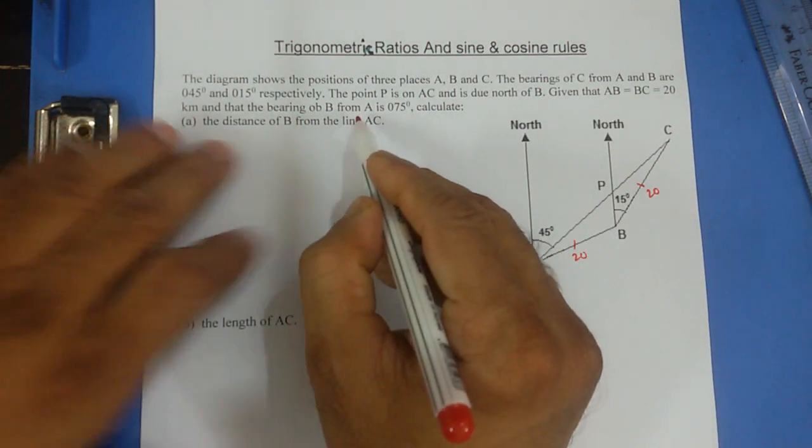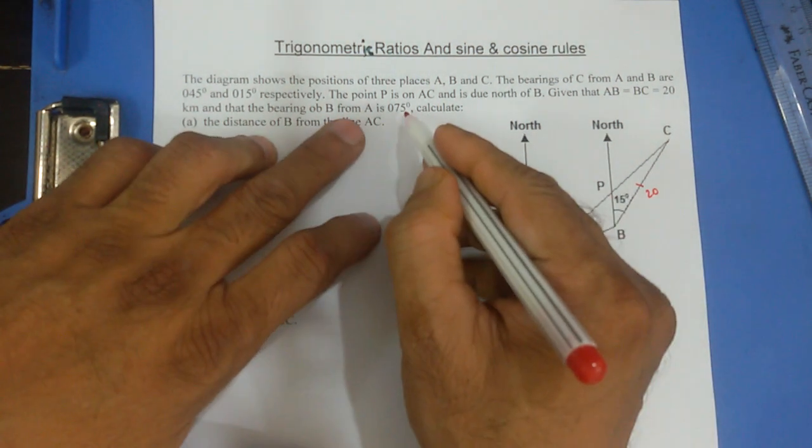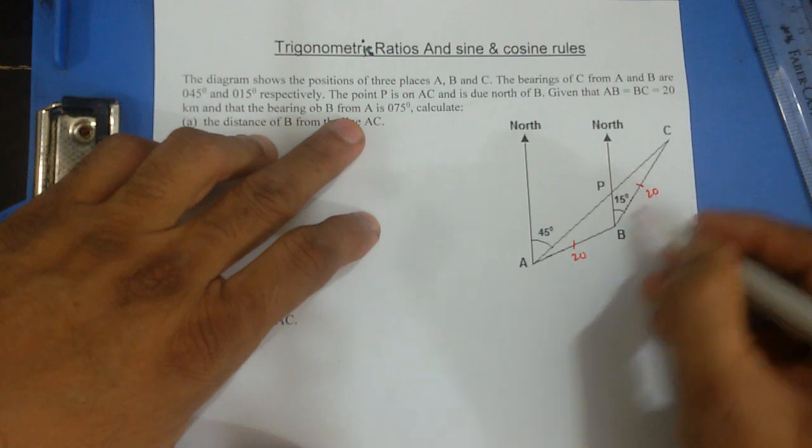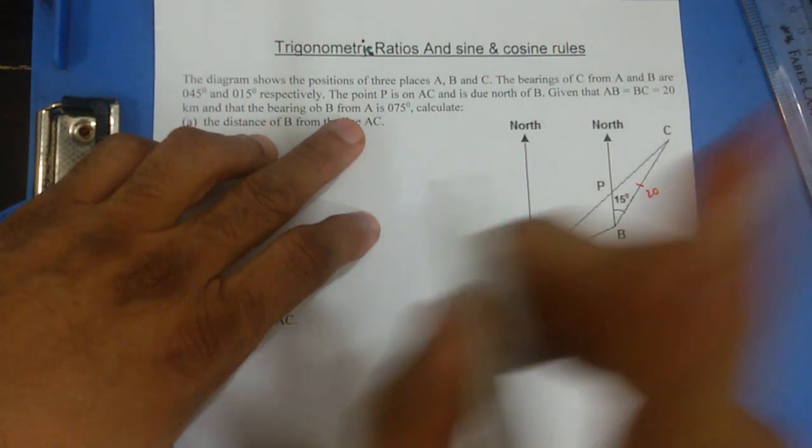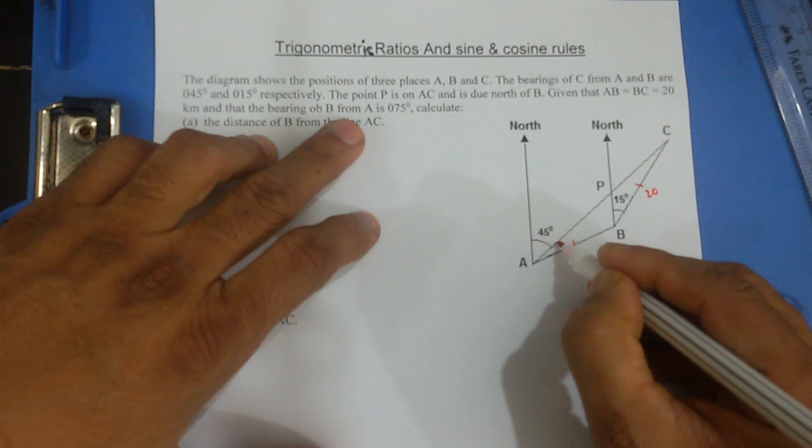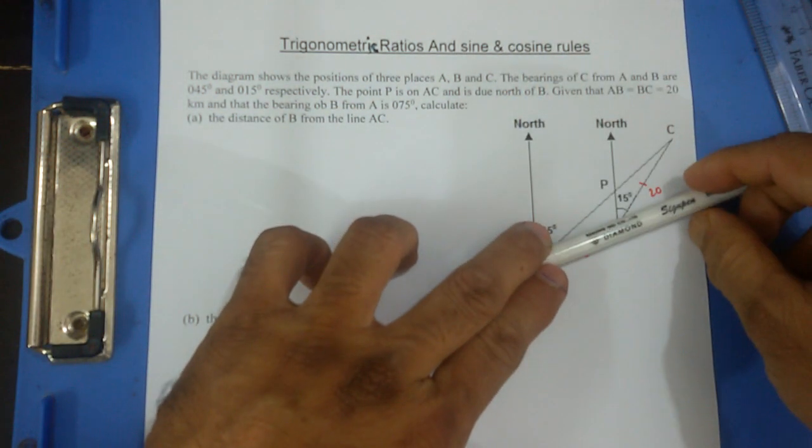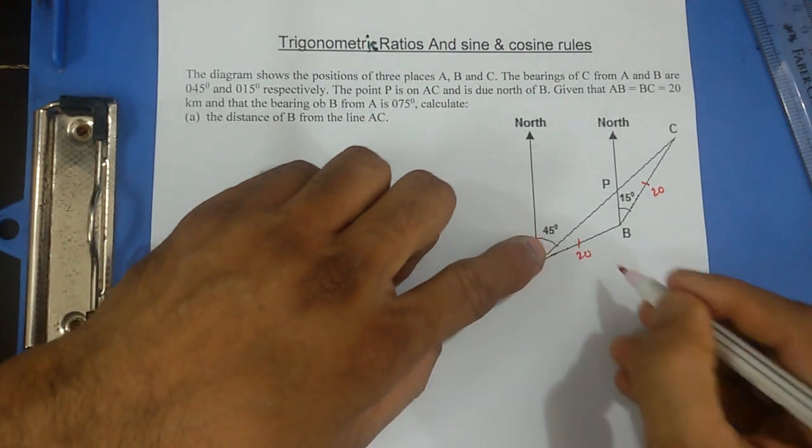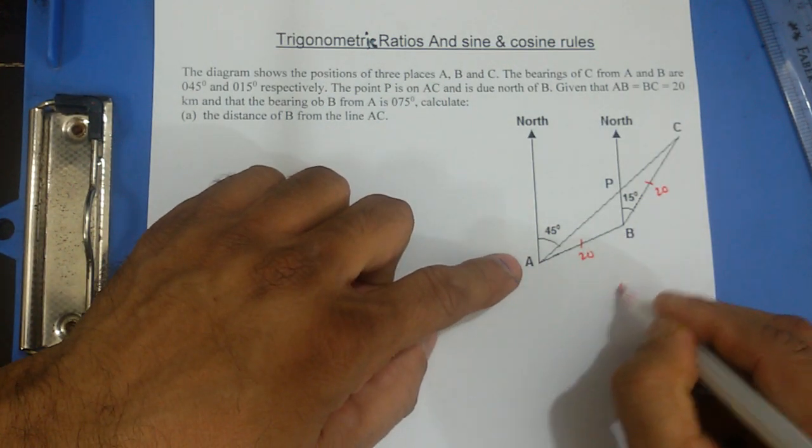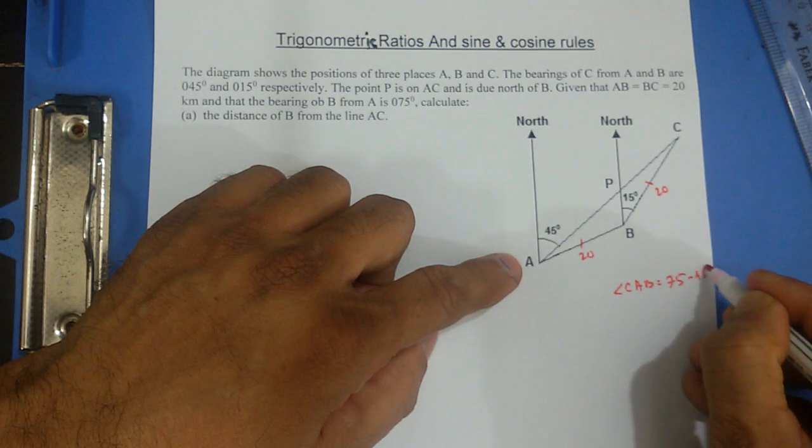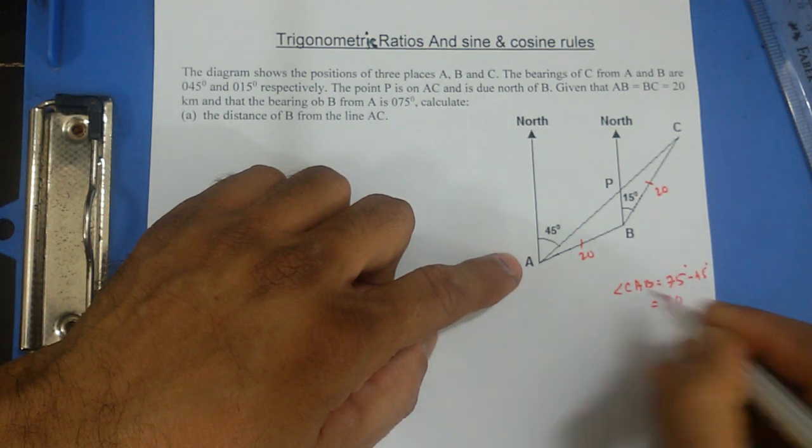And the bearing of B from A is 75. So this whole thing is 75. Since this is an isosceles triangle, whatever angle is here, this angle is here. So let's calculate this angle. The bearing from here to here is 75, and up to here is 45. So angle CAB is supposed to be 75 minus 45, that's 30 degrees.